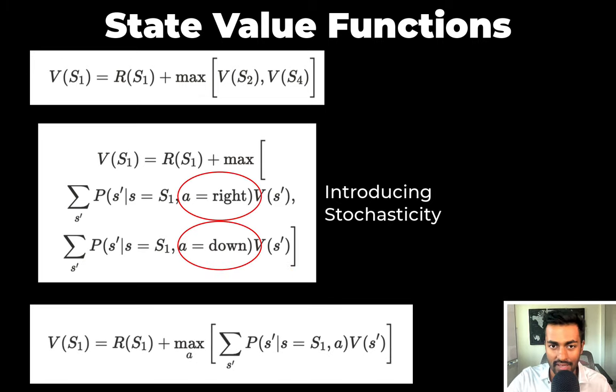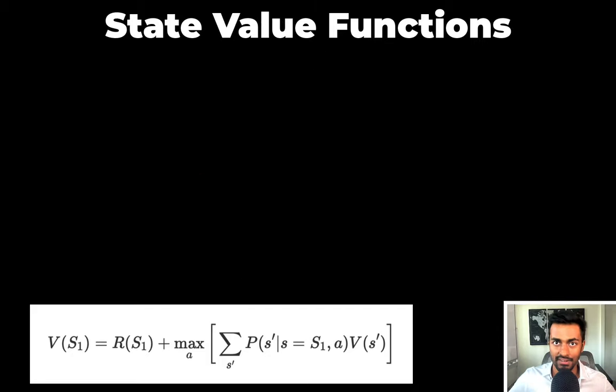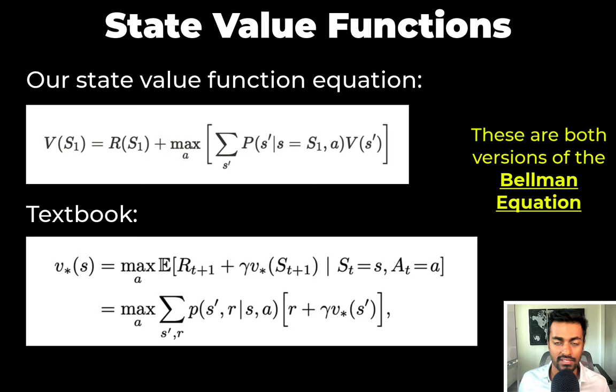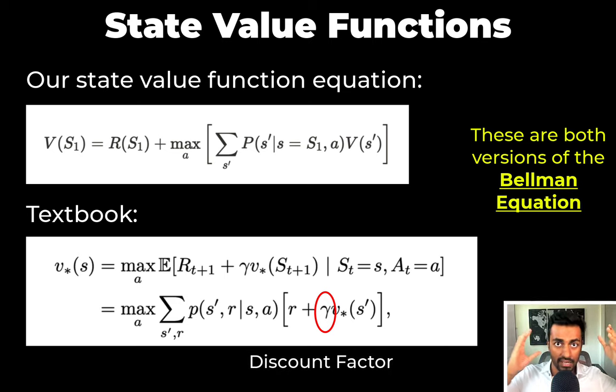And in general, instead of just saying right or down, we could just give it a generic action A. This is similar to the textbook equation with two main differences. The first is that the textbook has a gamma term. This gamma term is known as a discount factor, and it will quantify how important are the current rewards obtained versus the future rewards that are obtained. And it will discount the future rewards because it's a number between zero and one.